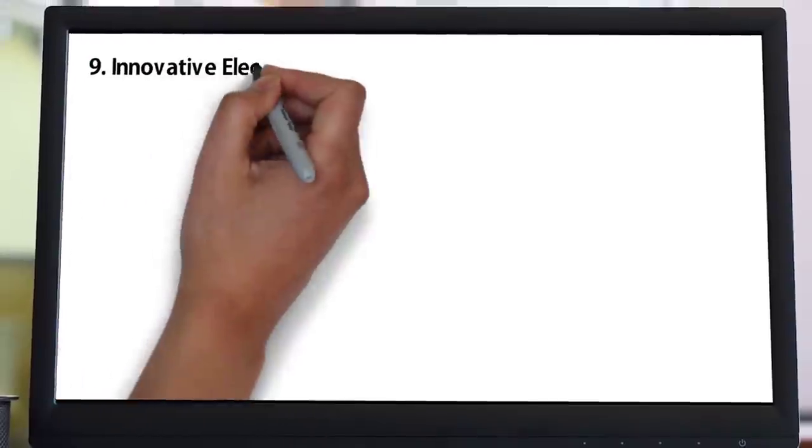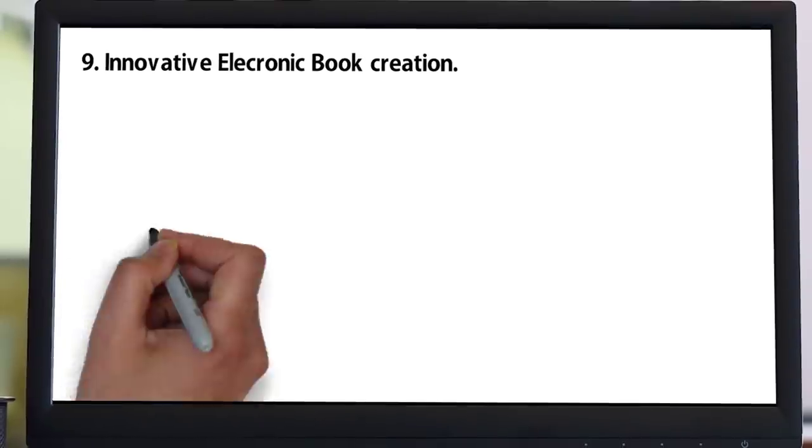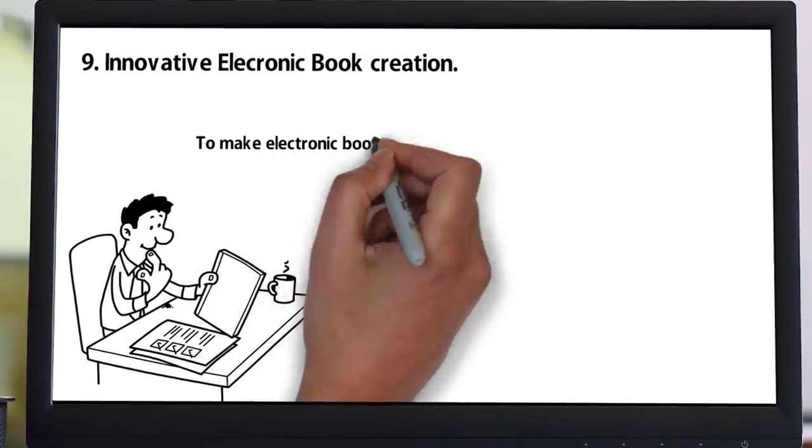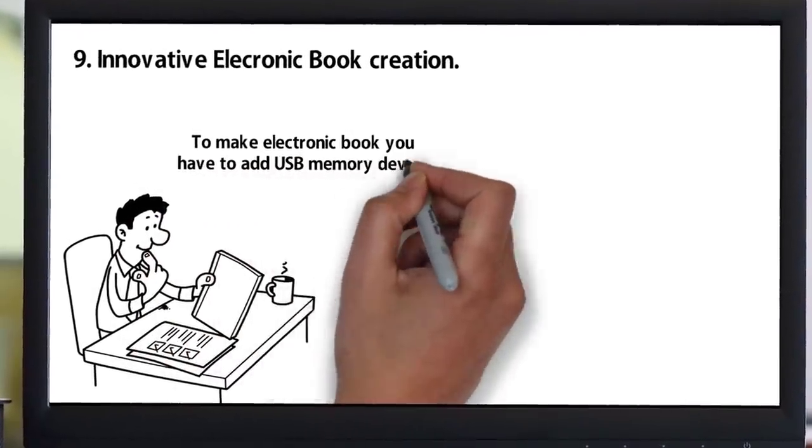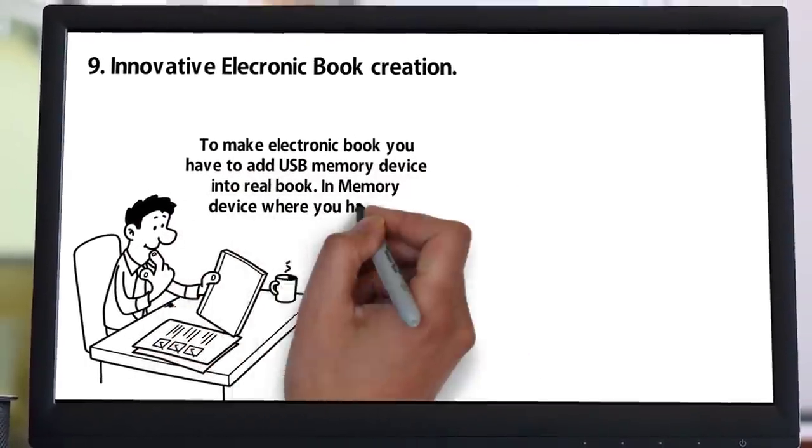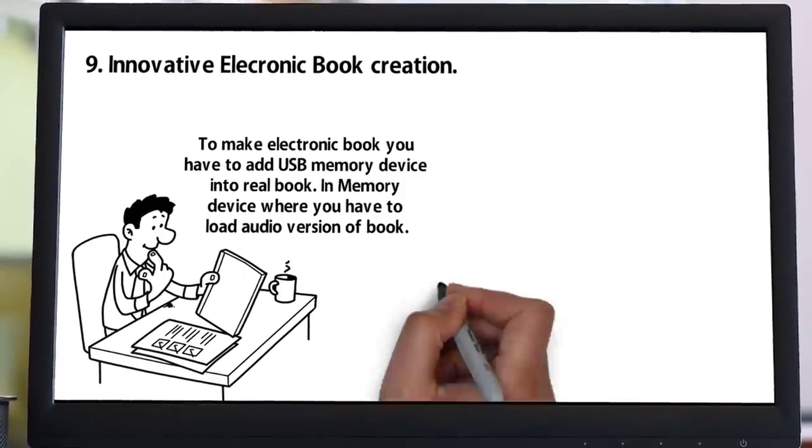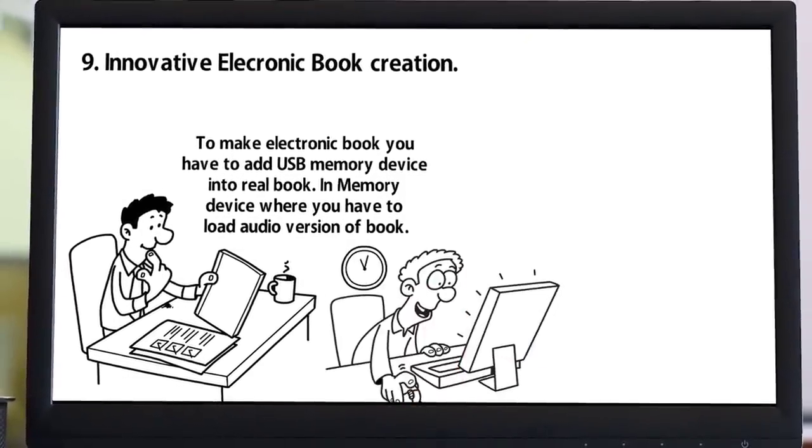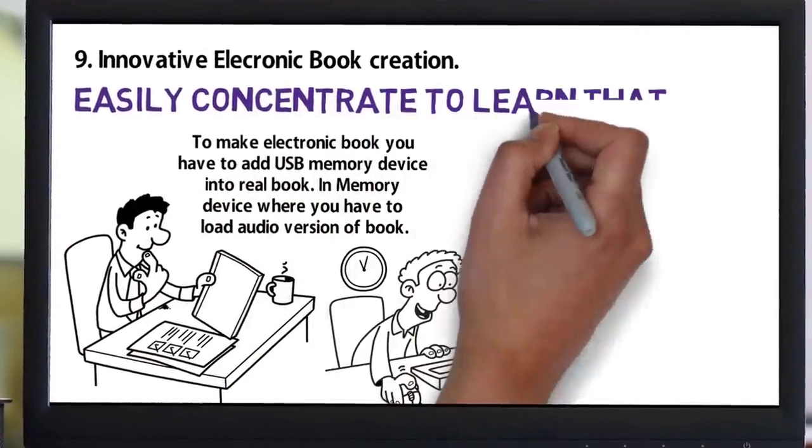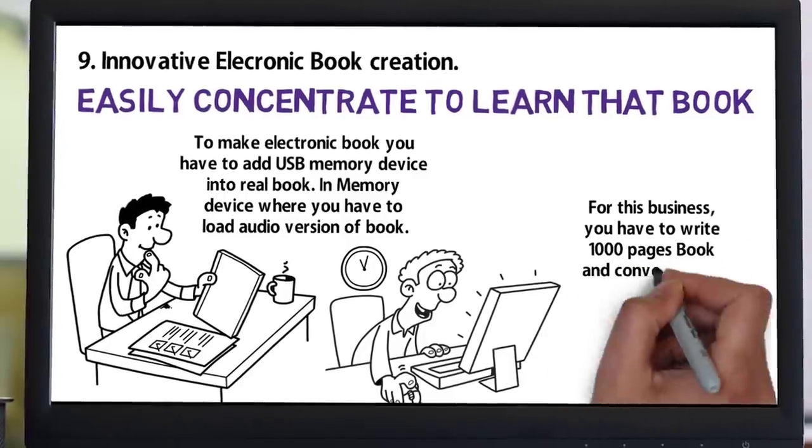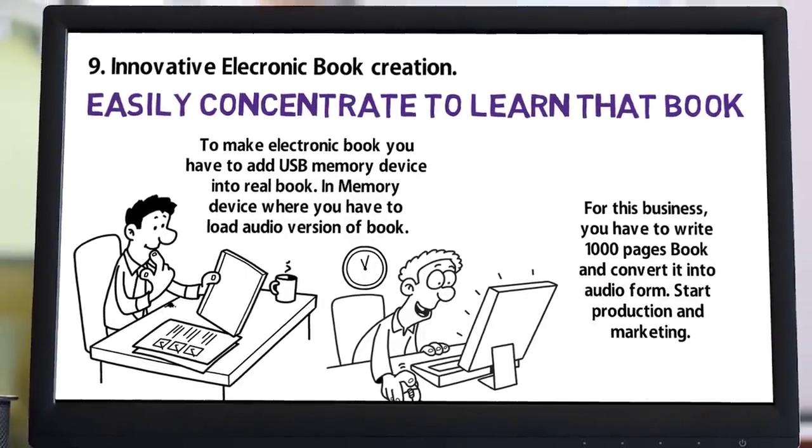Number nine: Innovative electronic book creation. This is one best idea that you can implement in your style. To make electronic books, you have to add USB memory device into a real book where you load the audio version of the book. Lazy people love to listen to books while reading pages so they can easily concentrate to learn. For this business, you have to write a thousand page book, convert it into audio form, and start production and marketing.